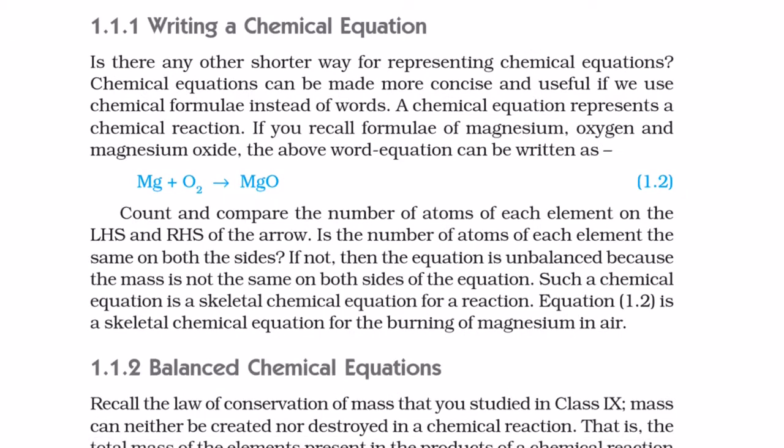1.1.1 Writing a chemical equation. Is there any other shorter way for representing chemical equations? Chemical equations can be made more concise and useful if we use chemical formulae instead of words. A chemical equation represents a chemical reaction. If you recall formulae of magnesium, oxygen, and magnesium oxide, the above word equation can be written as Mg plus O2 gives MgO. Count and compare the number of atoms of each element on the LHS and RHS of the arrow. Is the number of atoms of each element the same on both sides?